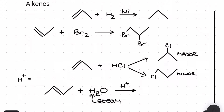For the final alkene reaction, I'm reacting steam with an alkene in the presence of an acid catalyst of either phosphoric acid or sulfuric acid to make an alcohol. You can also have the major/minor split here if you have an unsymmetrical alkene, but there's no mechanism required.